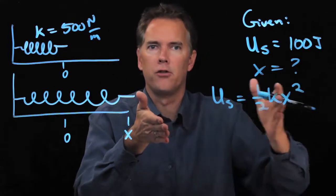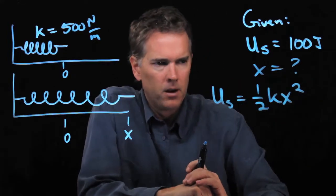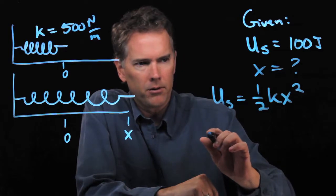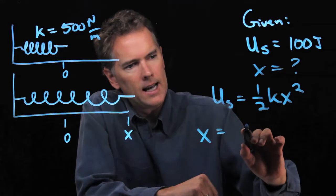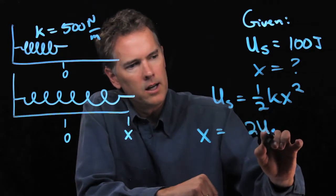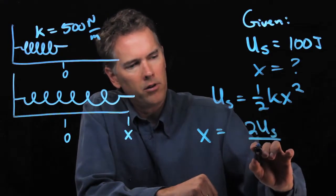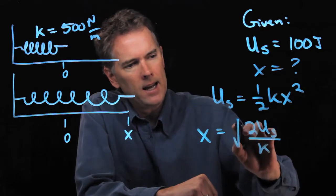We can solve this for X. Multiply by 2, divide by K, take the square root. I get 2 times energy in the spring U sub S divided by K, and then that whole thing I have to square root.